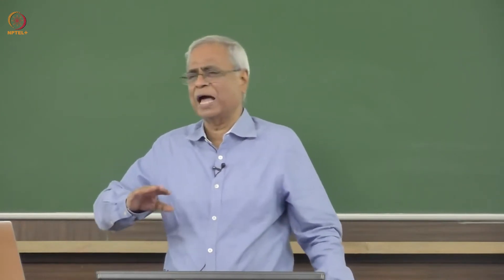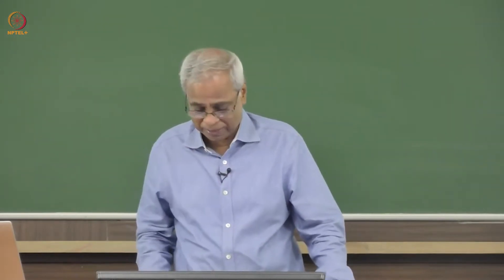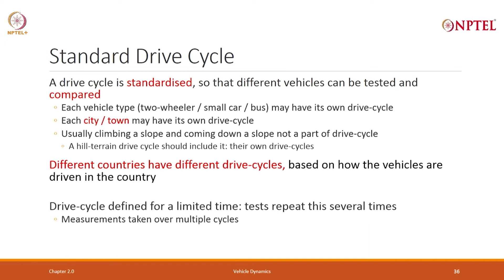A drive cycle also takes into account average road conditions and speed limits. Normally, a drive cycle is never defined for 100 kilometers. It is defined for smaller distances — 2 kilometers, 2.5 kilometers — and then you keep repeating that cycle, typically 10 to 20 times, and take measurements over multiple cycles to get reliable results.